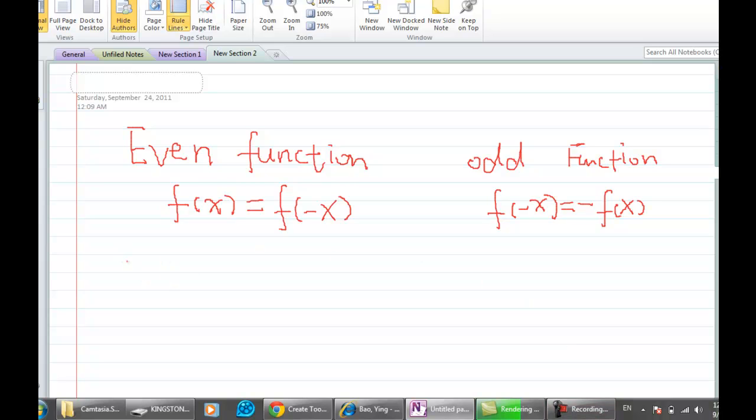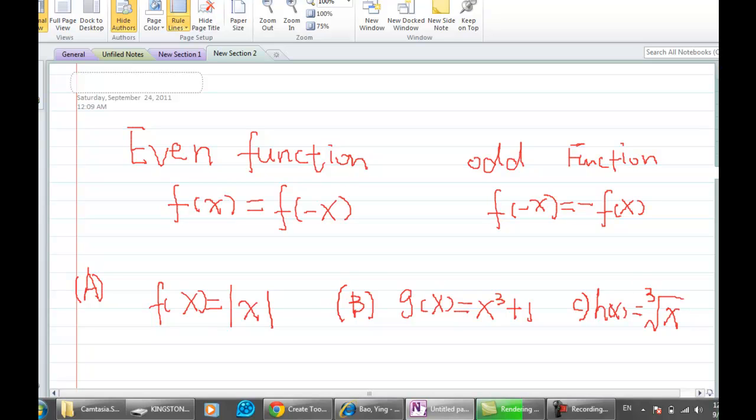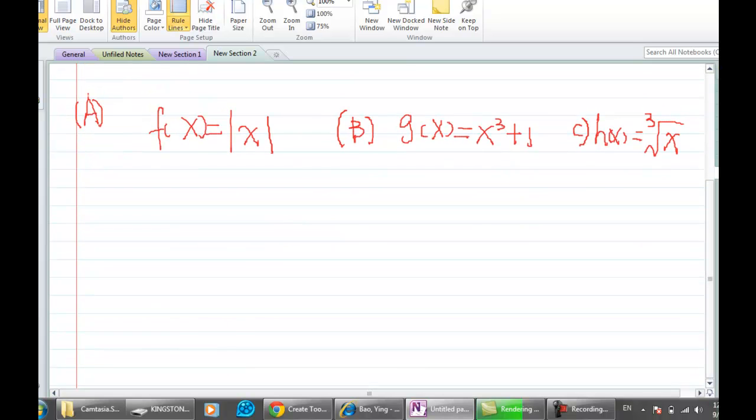So we already know this property, so we can start doing some examples. First, we have f(x) equals absolute value of x. We're going to have three examples. The b part is g(x) equals x to the cube plus 1. And c is, we have h(x) equals to the cube root of x. So without graphing, let's see how we can test this.